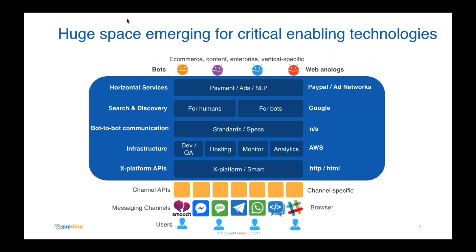A little bit about GupShop and the bot ecosystem. The technical stack for a user to interact with a chatbot starts at the bottom with users, who interact on messaging channels — everything from Telegram, WhatsApp, Slack, Facebook Messenger, and more. Each of these channels has their own channel-specific APIs. For instance, Twitter has their own APIs, Facebook Messenger has their own APIs, and these obviously differ.